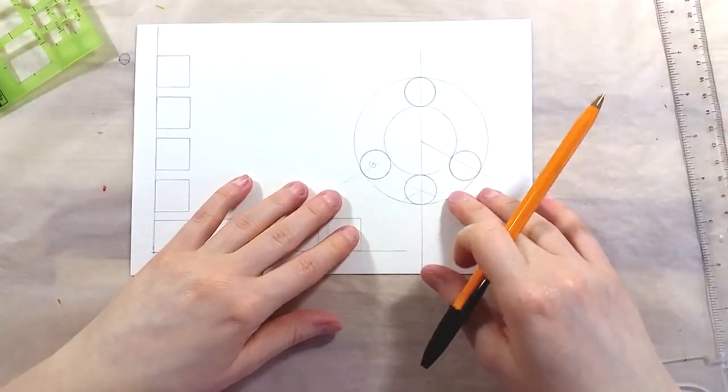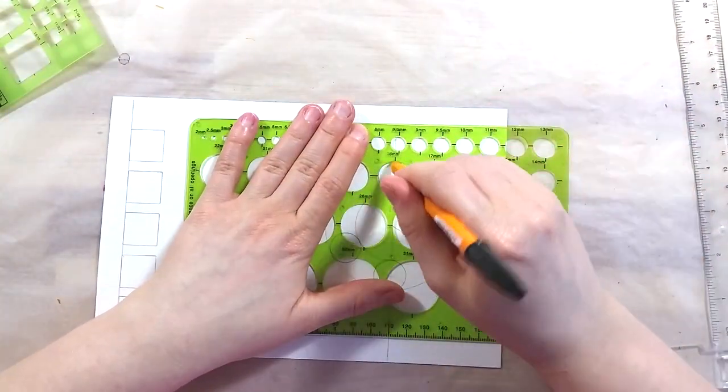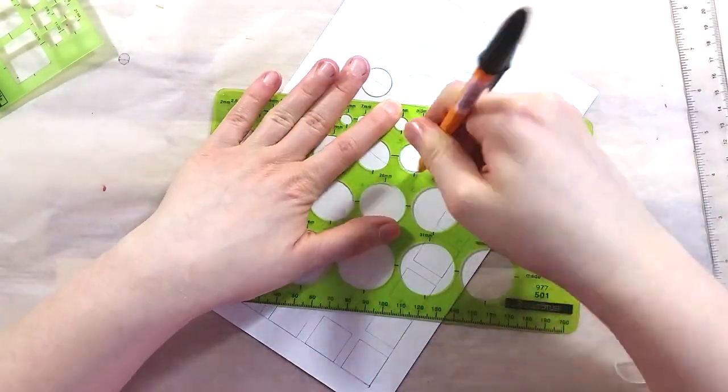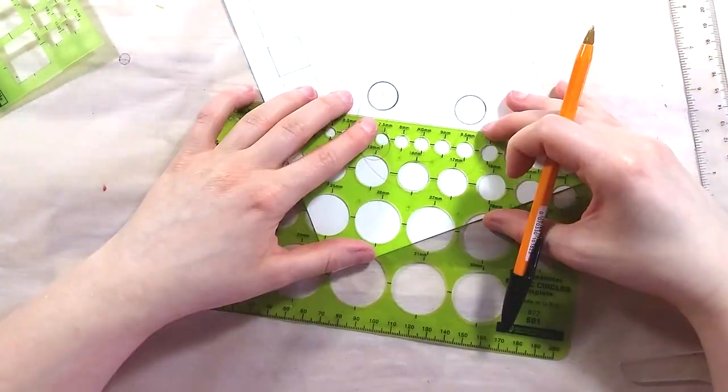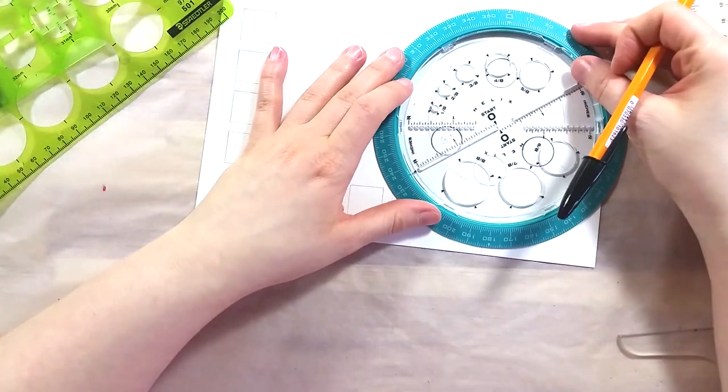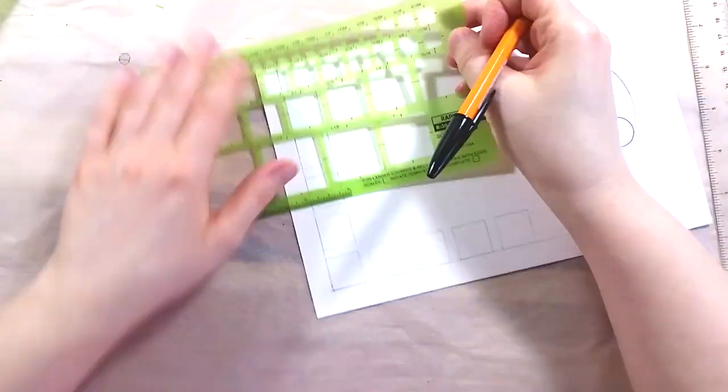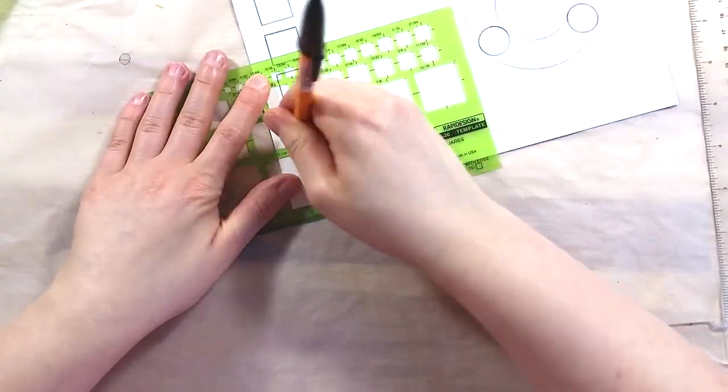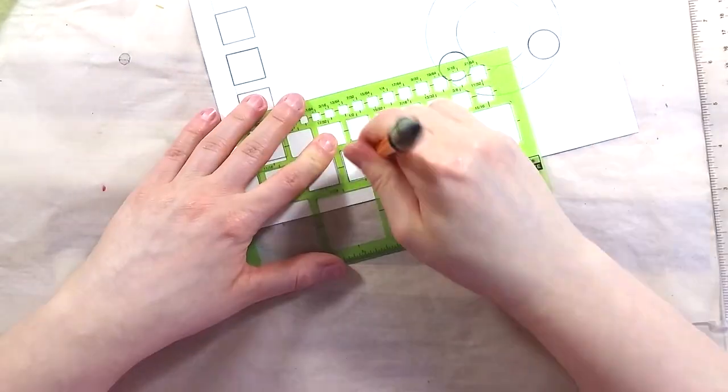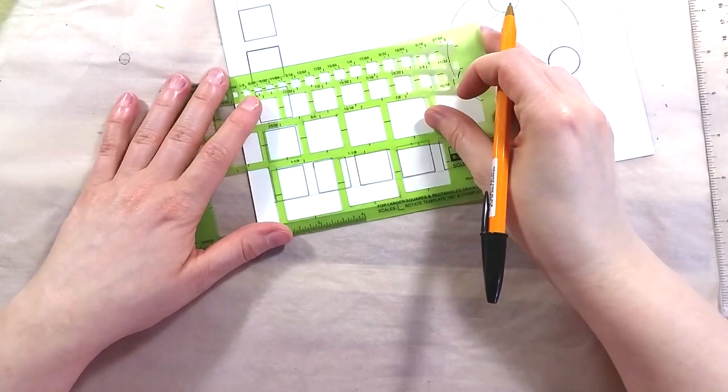Once I'm happy with the placement and size of everything, I ink them in with a ballpoint pen. I love using these because they don't smudge, they don't leave ink on the stencils, and they are waterproof. Ballpoint ink dries fast too, so I can erase the pencil lines and the whole thing is ready for paint.